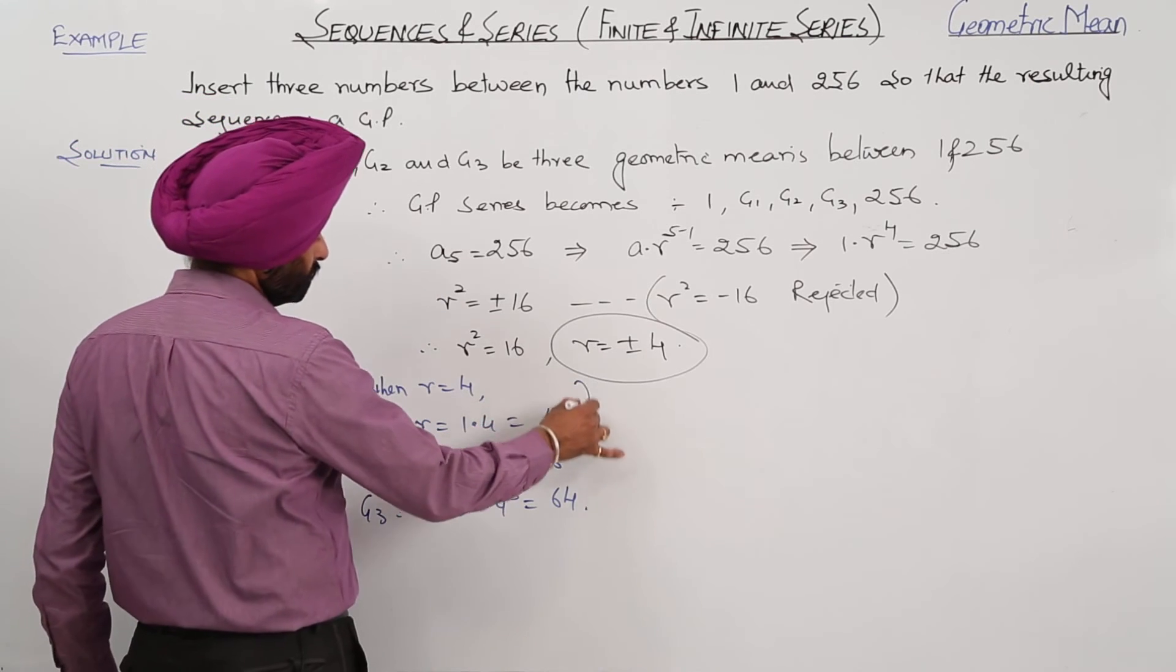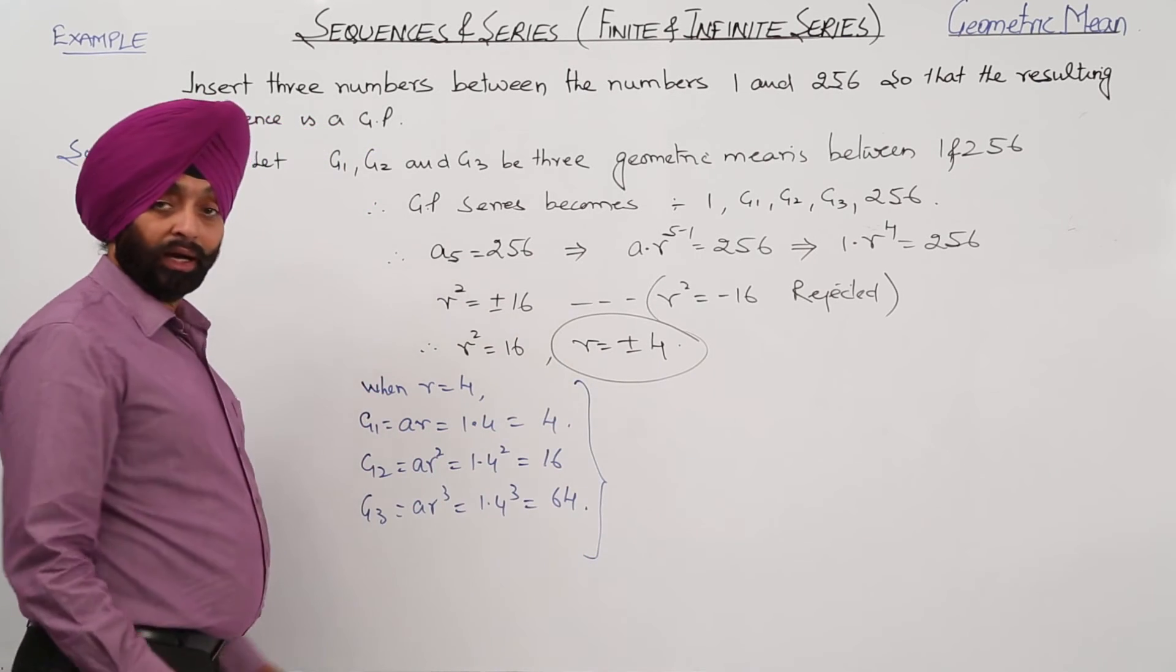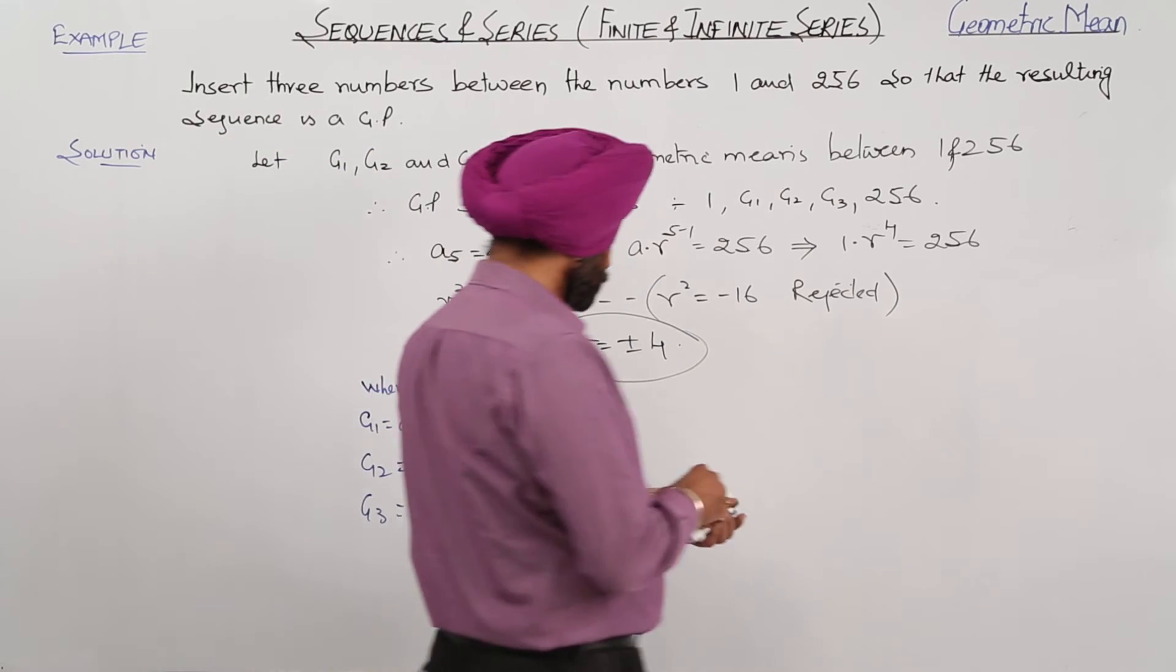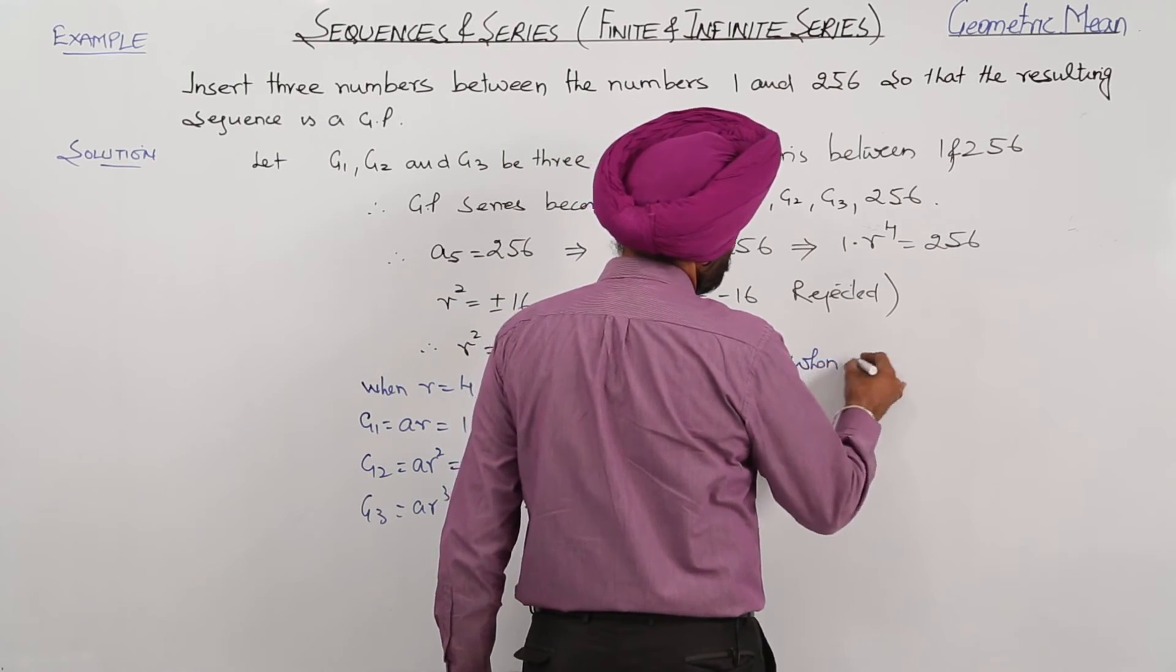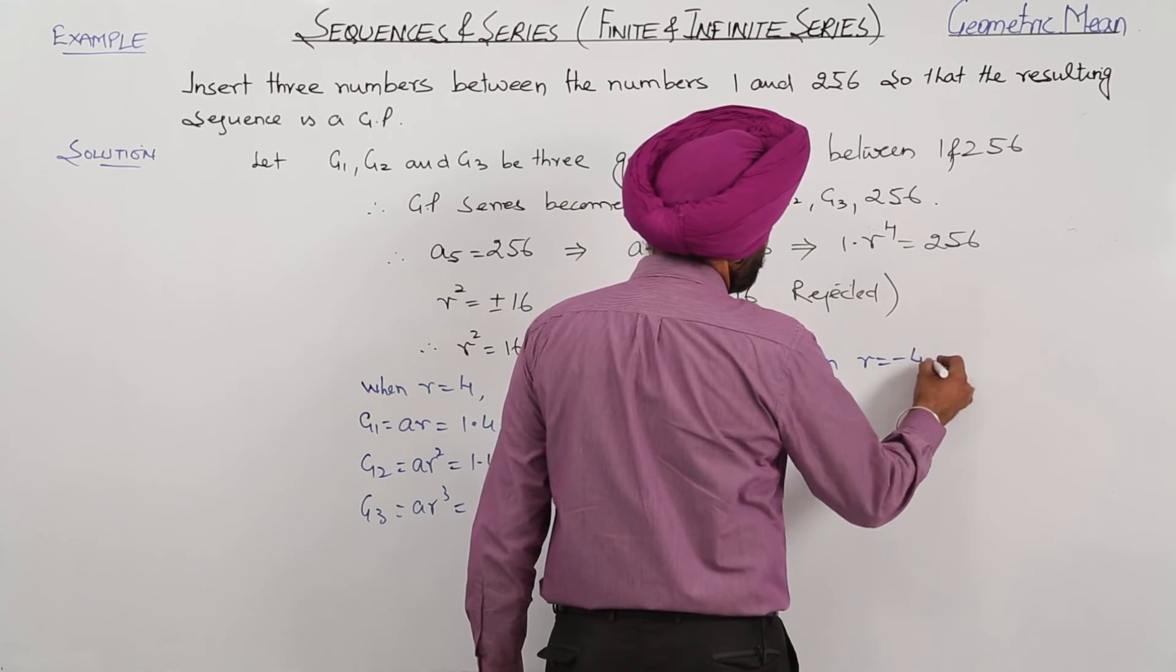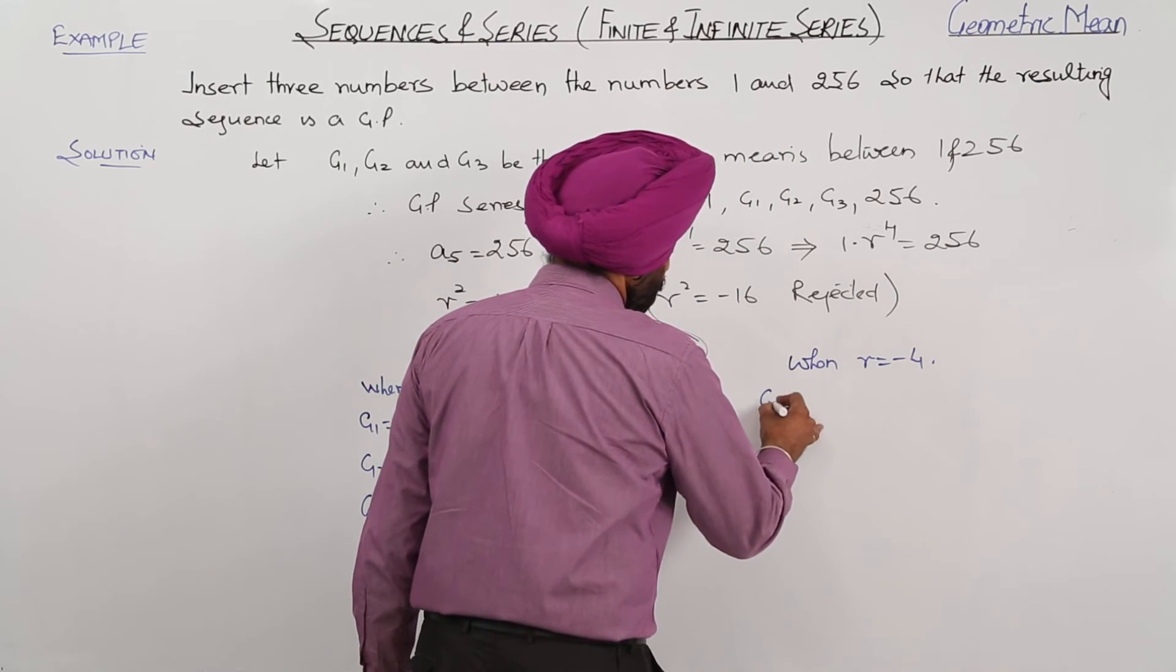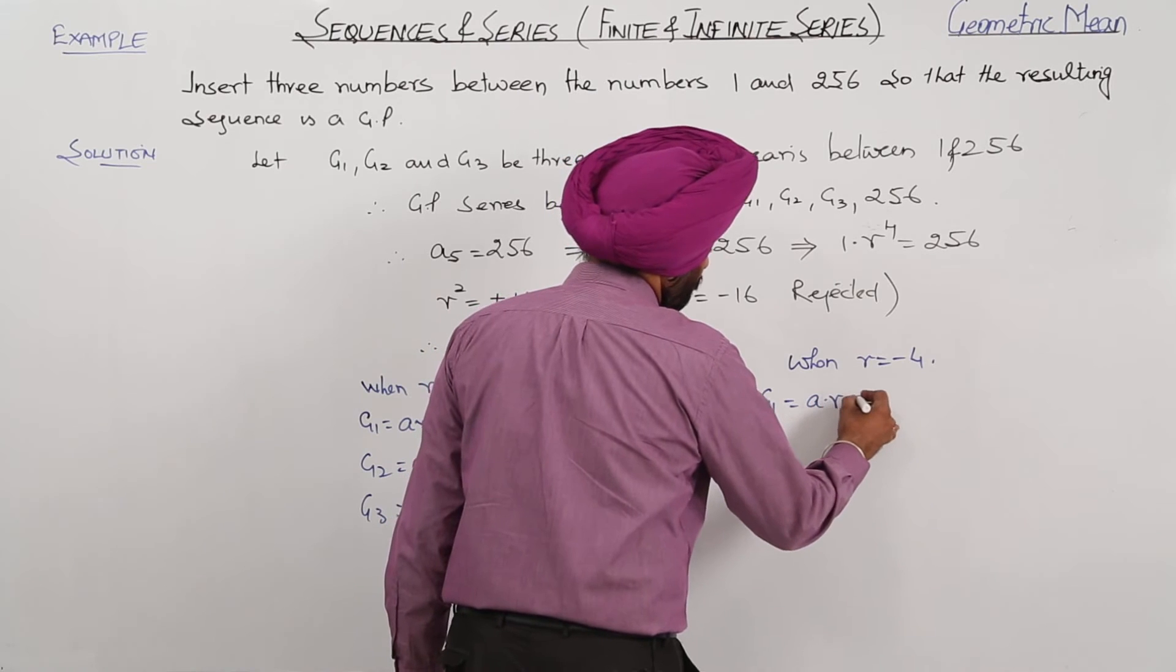So we got 3 GMs when R is equal to 4. Now when R is equal to negative 4, then G1 is equal to AR, this is equal to 1 times negative 4 is equal to negative 4.